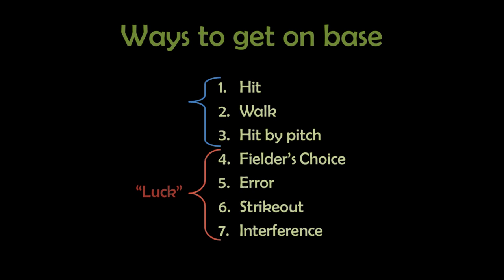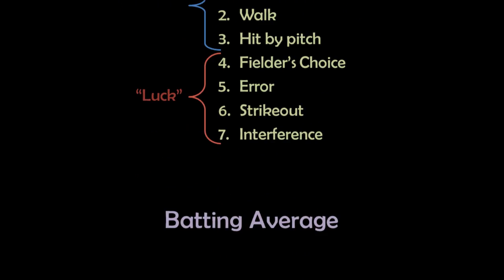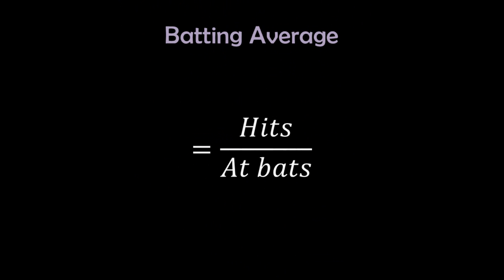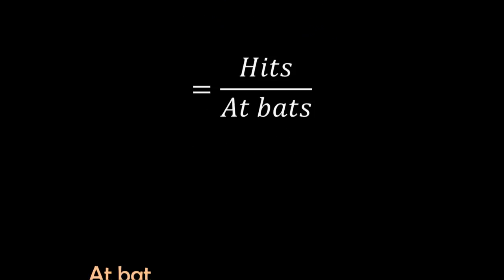But let's get to our actual stats. Batting average is pretty simple: the number of hits divided by the number of at-bats. At-bats include every time the batter got a hit, reached on an error, fielder's choice, or got out. There are plenty of things that batting average does not include, though.